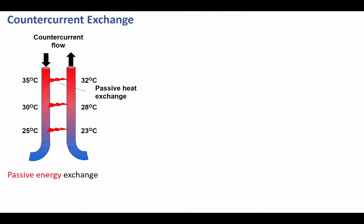We have two types of countercurrent mechanisms, and both of these will be functional in the kidney. The first is referred to as countercurrent exchange. In countercurrent exchange, the two tubules have flow in opposite directions and are close enough to each other that energy — which could be heat or ion concentrations — will flow from one tubule to the other passively. The exchange is passive, and only small gradients will be responsible for the exchange.